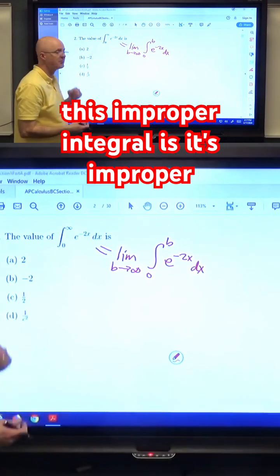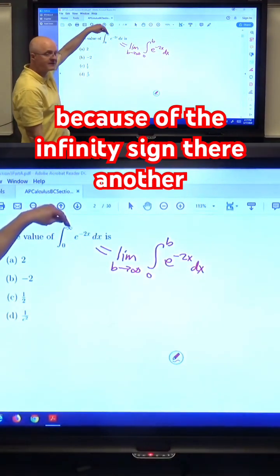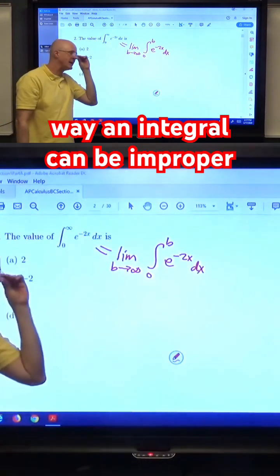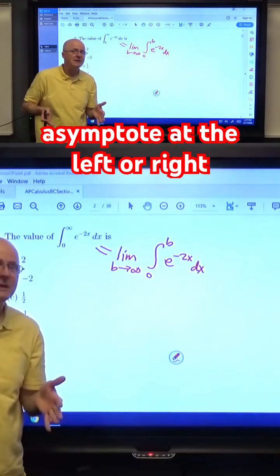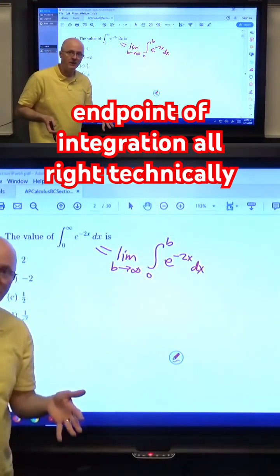This is the definition of what this improper integral is. It's improper because of the infinity sign there. Another way an integral can be improper is if you've got a vertical asymptote at the left or right endpoint of integration.